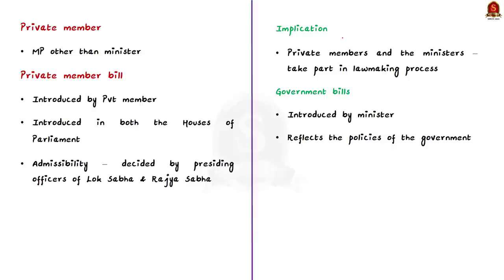First of all, who is a private member? A member of parliament, that is an MP, who is not a minister is called a private member. Now, what is a private member's bill? A bill introduced by a private member — that is, a member other than the ministers — is called a private member's bill.